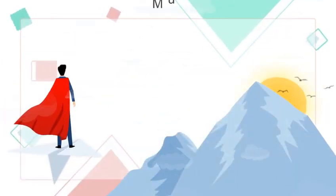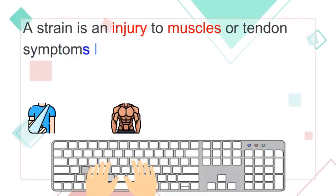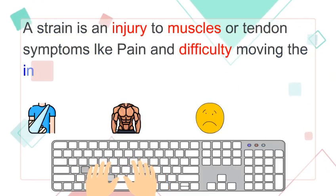1. Muscle Cramps and Strains. A strain is an injury to muscles or tendon. Symptoms are pain and difficulty moving the injured muscle.